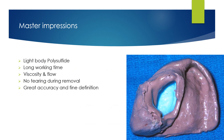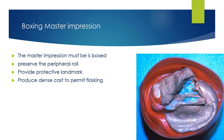Master impressions can be registered using light body polysulfide because of its long working time, viscosity, and flow, and it doesn't tear during removal — giving great accuracy and fine definition. It is important that the master impression must be boxed, because it will preserve the peripheral roll, provide protective landmarks, and produce dense casts to permit flasking.